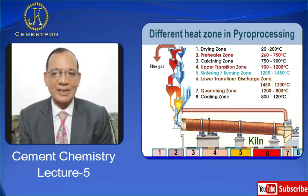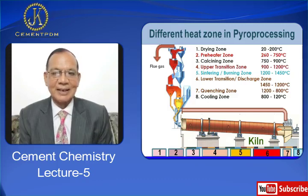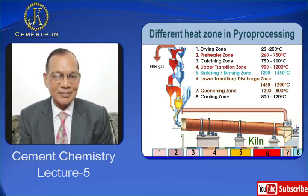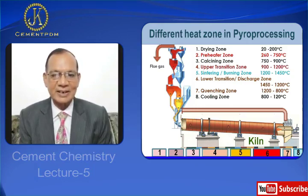Fourth is the upper transition zone, at 900 to 1200 degrees centigrade. Then you have the sintering or burning zone, where the temperature ranges from 1200 to 1450 degrees centigrade. Then the lower transition zone or discharge zone, where temperature ranges from 1450 to 1200 degrees centigrade. Then the quenching zone, ranging from 1200 to 800 degrees centigrade. And finally the cooling zone, where temperature ranges from 800 to 120 degrees centigrade.